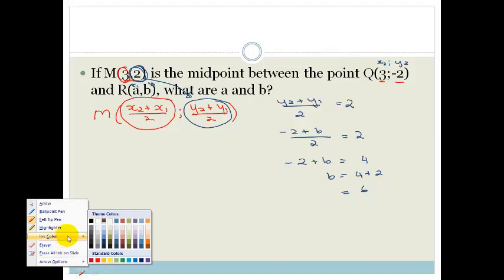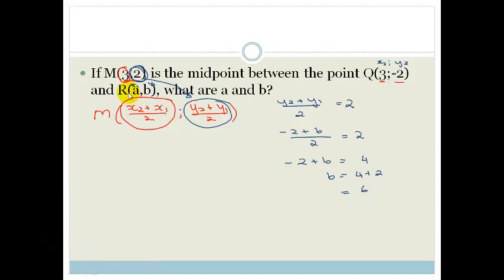So therefore the y value of our R is going to be 6. Now let's do the next one. So this time we're going to be looking at the 3, and we're going to be looking at our x values of our midpoint. So we know that x2 plus x1 over 2 has to equal to 3.